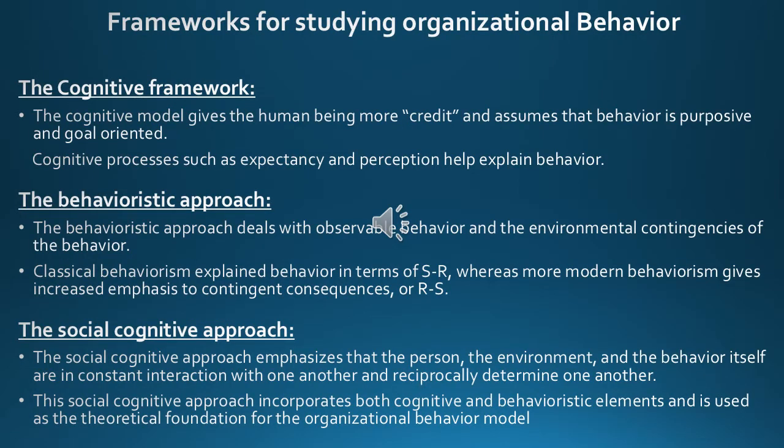To study organizational behavior, over the years we came up with three frameworks — now called approaches. The first is the cognitive framework, which analyzes the cognitive processes that take place when people think about how they should behave in response to different stimuli. Cognitive processes such as expectancy and perception help to explain behavior.